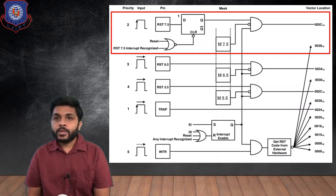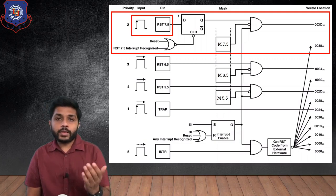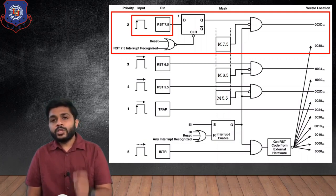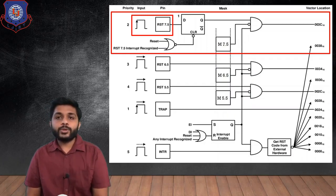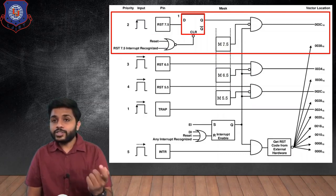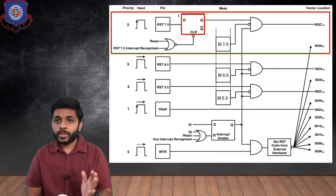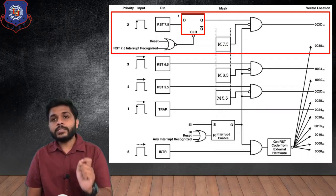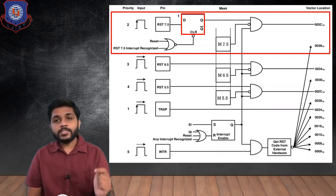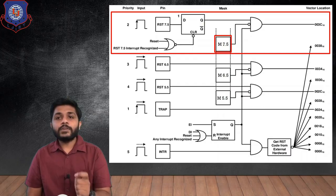The RST 7.5 interrupt is edge triggered, so whenever there is a spike from low to high this interrupt will be received. You can see that the RST 7.5 pin is connected to a D flip-flop. The reason this D flip-flop is necessary is that RST 7.5 is edge triggered, so there is a high chance that the processor will miss that interrupt. If in a fraction of time the processor is not able to receive it, the interrupt will be lost. So whenever there is a spike, this interrupt will be stored in the D flip-flop.